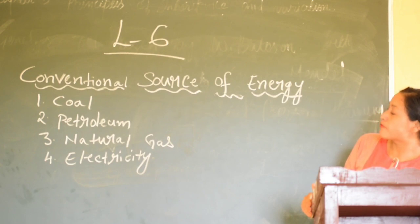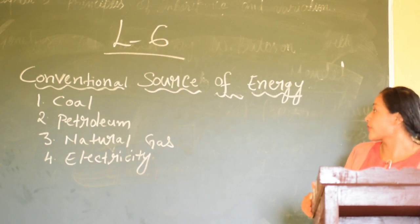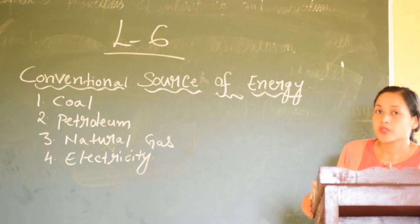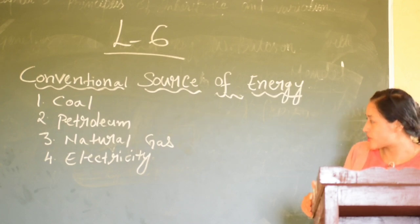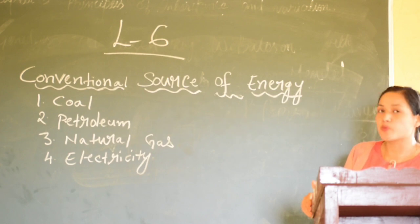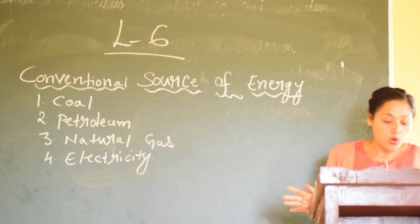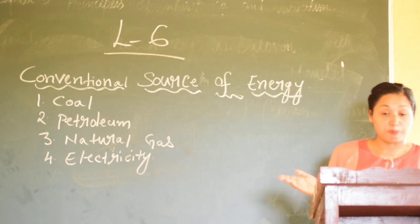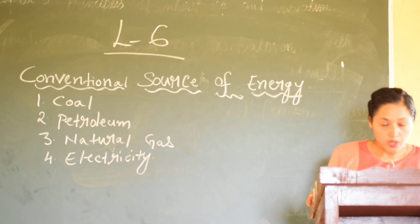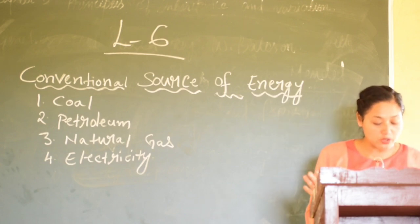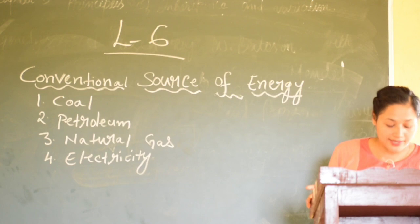On the board, I have written four examples of conventional source of energy. They are: one, coal; two, petroleum; three, natural gas; four, electricity. Let me give you some small definitions of these one by one. Coal is created from decaying plant materials over millions of years. Once the coal is used, it becomes ash. One third of the coal is being used in this world nowadays.